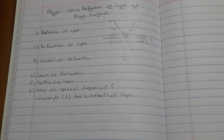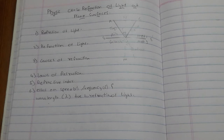The maximum speed of light is found in air. The speed of light in water is 2.25 × 10⁸ m/s, and in glass it is 2 × 10⁸ m/s.